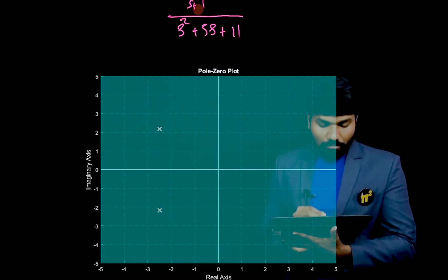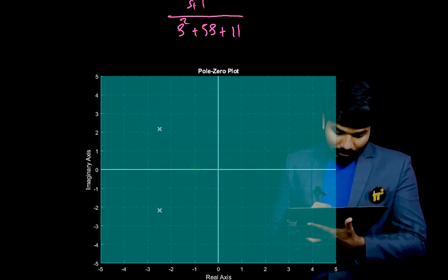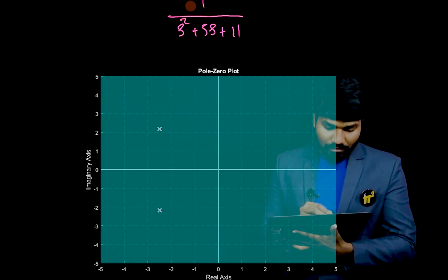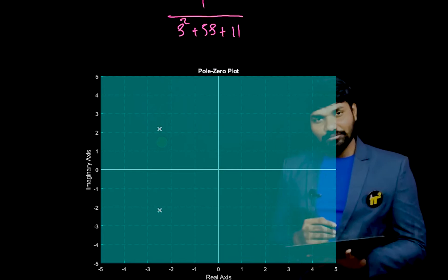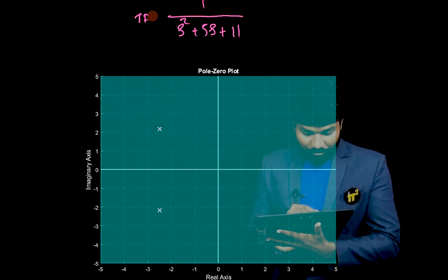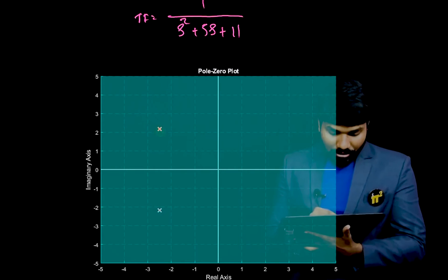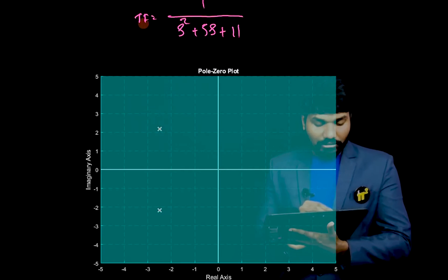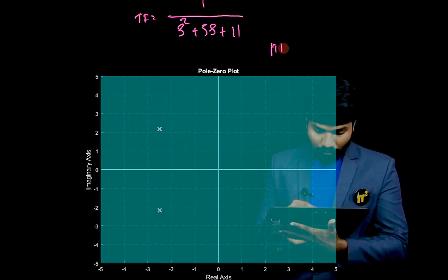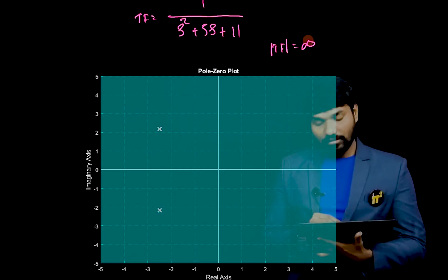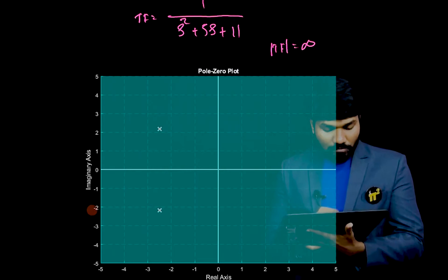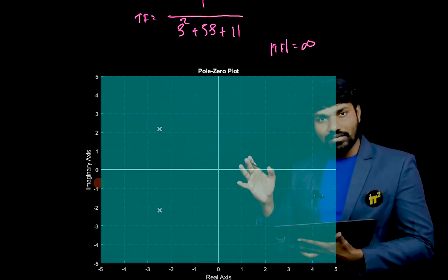If there were a zero — suppose s + 1 were in the numerator — I would represent it with a circle. But as I don't have one, I am not representing it. This is the common representation. The question is: why are these called poles? In the s-plane, we have the real axis and the imaginary axis. Both axes are there on this 2D plot.